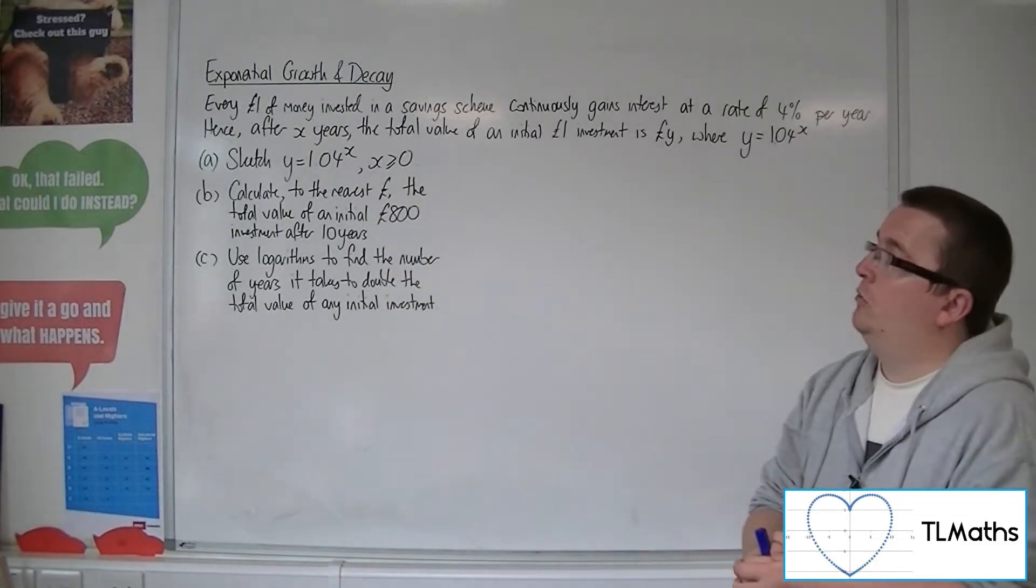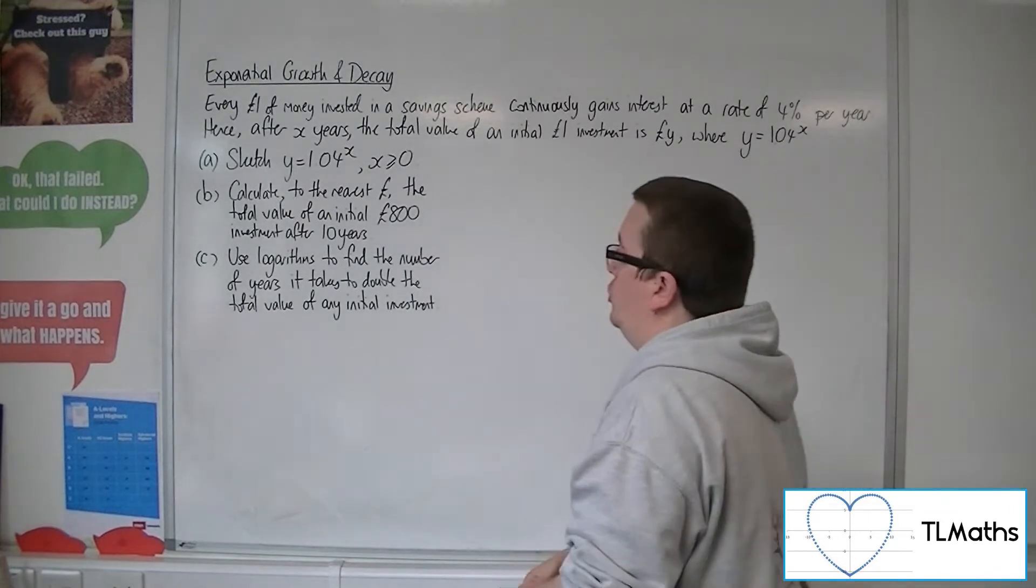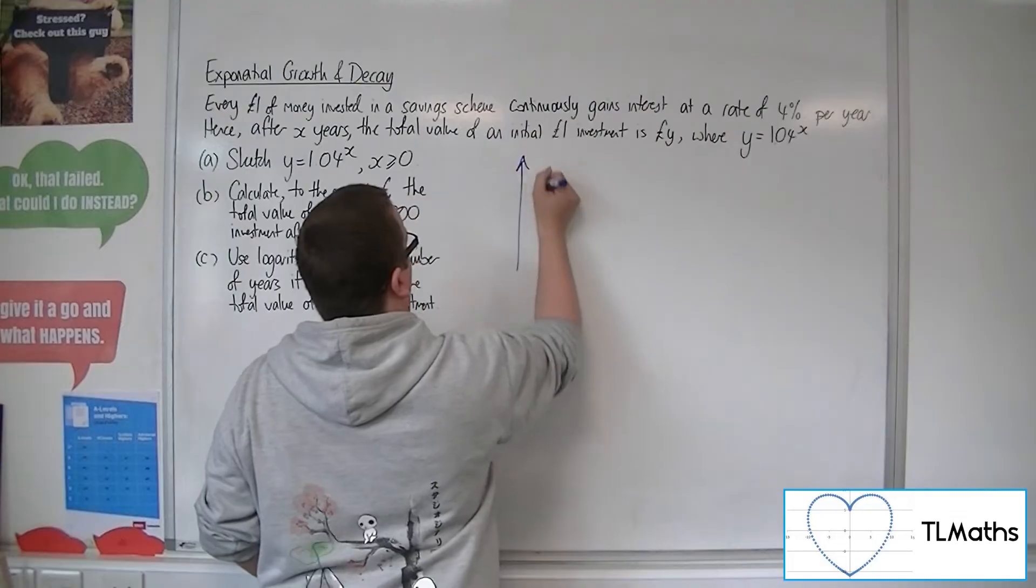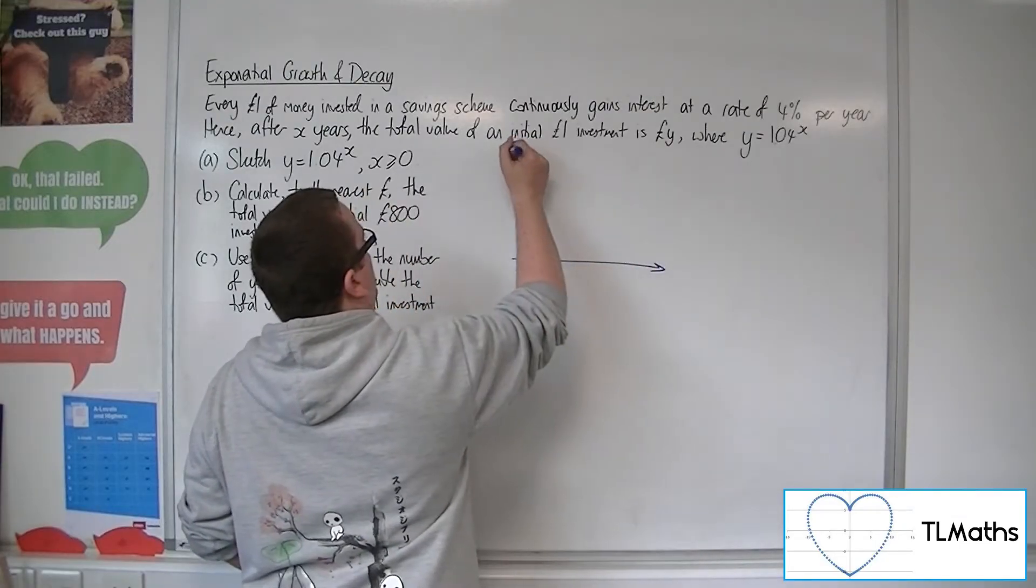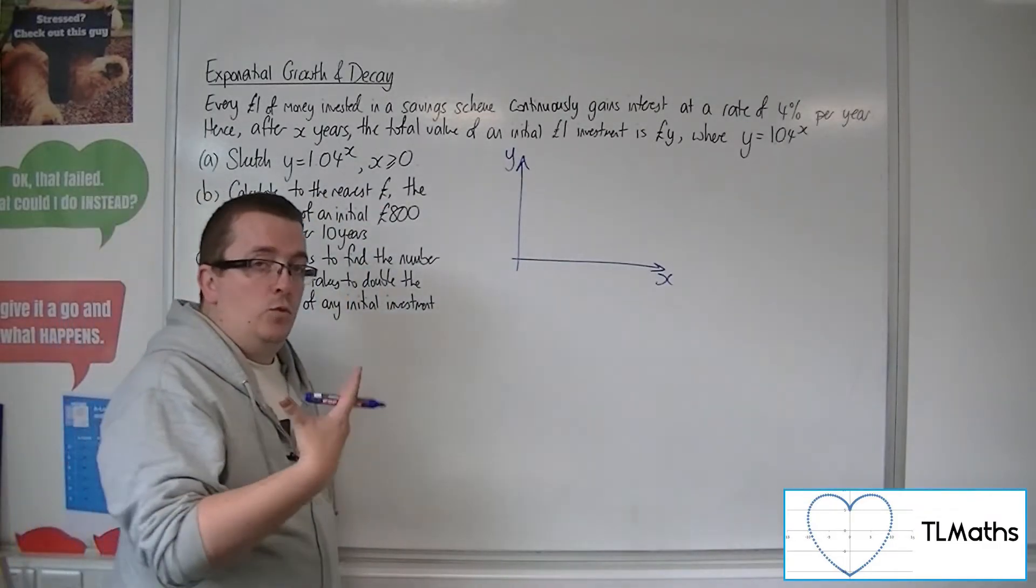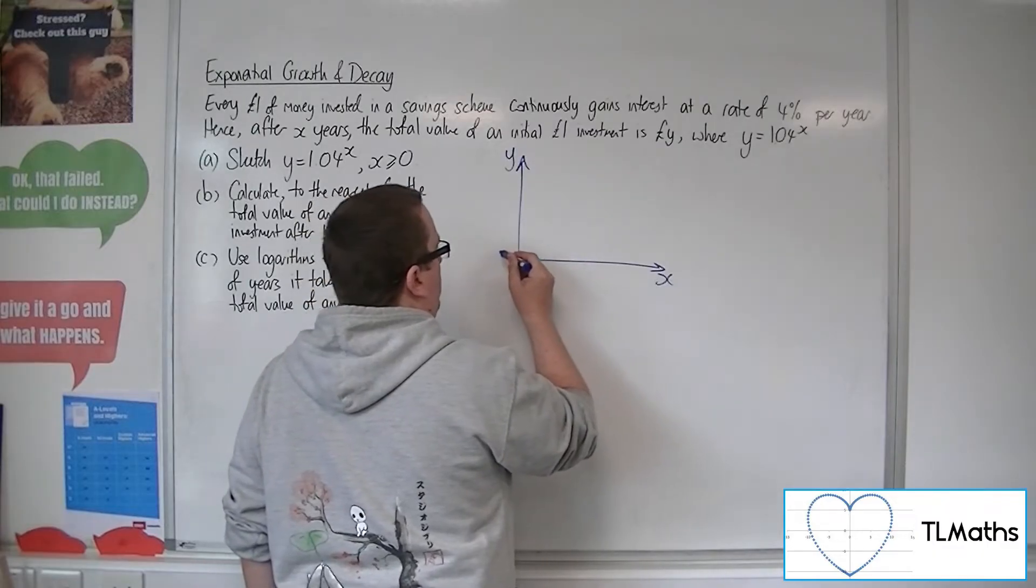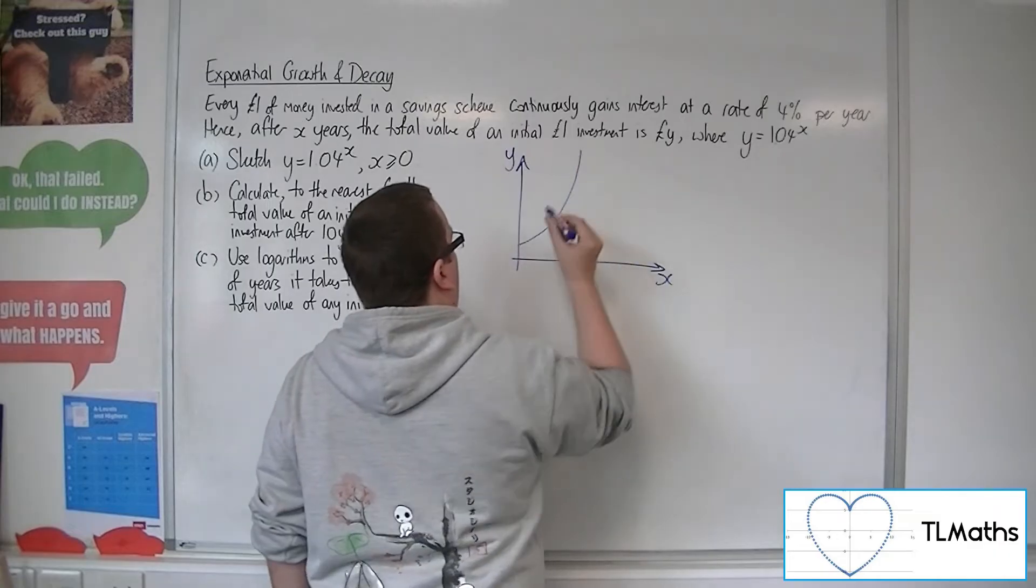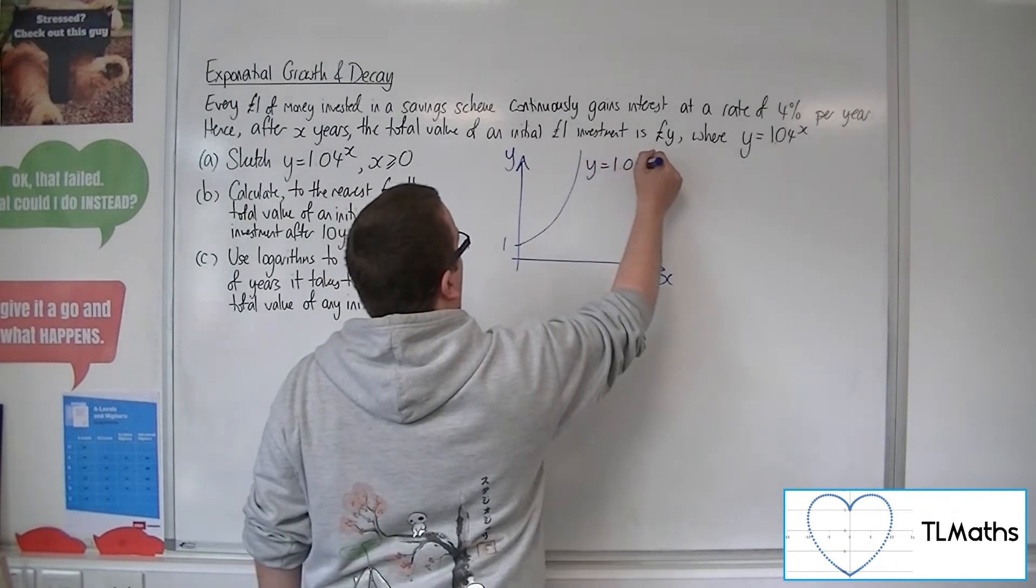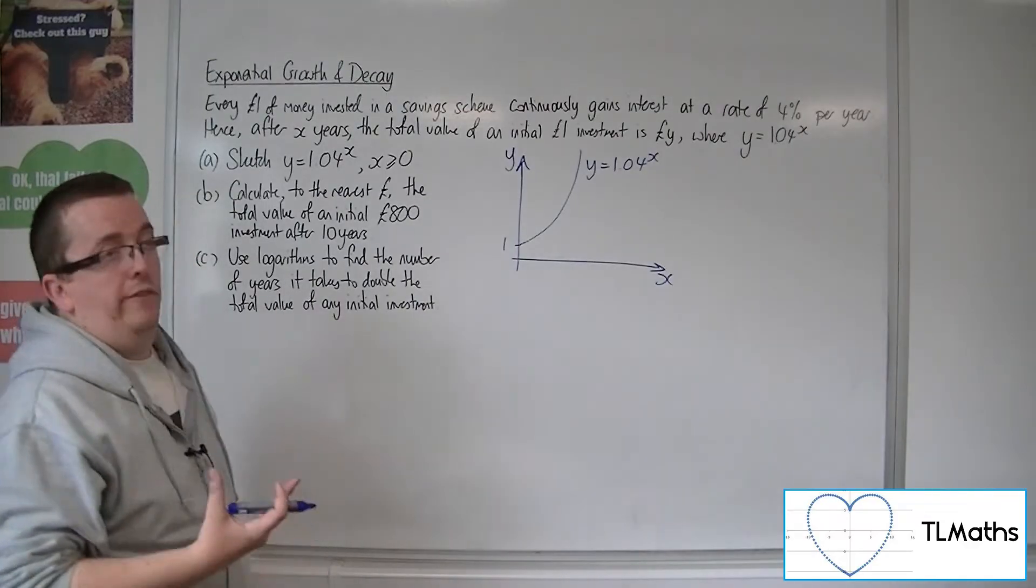First of all, part a, sketch y equals 1.04 to the x, where x is greater than or equal to 0. So we only need to show from the y-axis onwards to the right. So y and x. Now we know that a to the x, what that looks like, and it is a curve that would have been coming in like this, goes through 1, and increases exponentially. Like so. This is what that graph would look like.